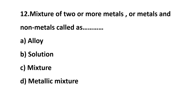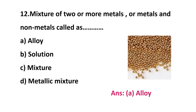Question 12: mixture of two or more metals or metals and non-metals are called — option A: alloys, option B: solution, option C: mixture, option D: metallic mixtures. A mixture of two metals or a metal and non-metal is known as an alloy. The answer is option A: alloys.